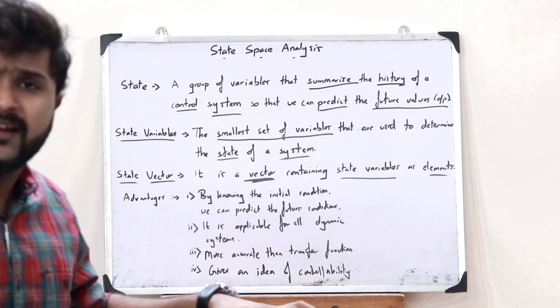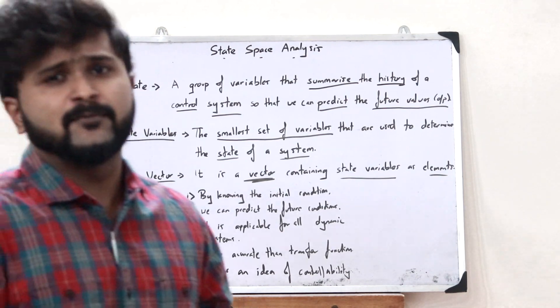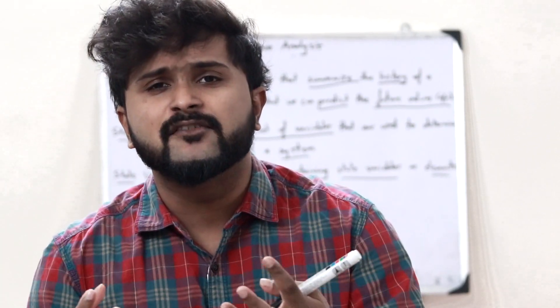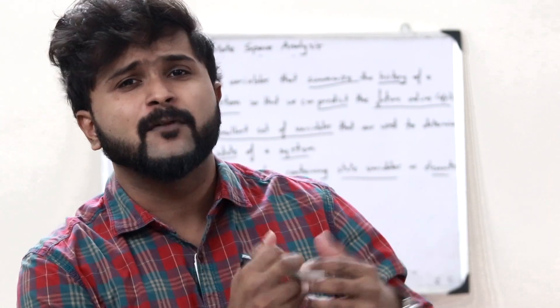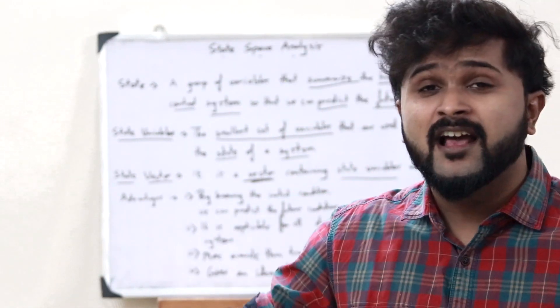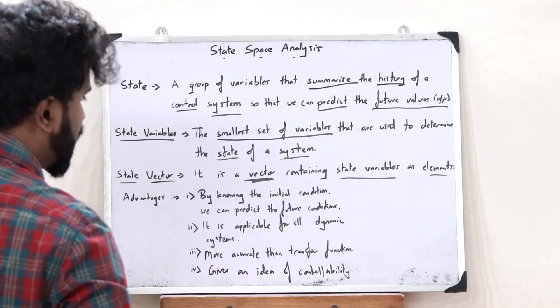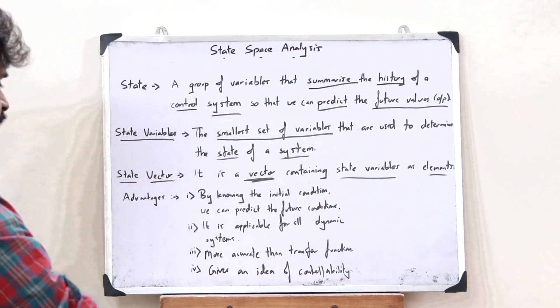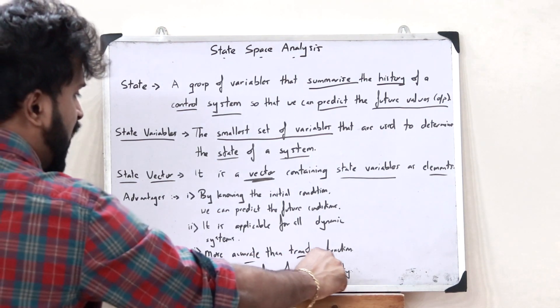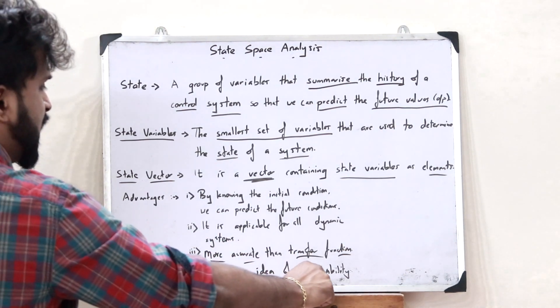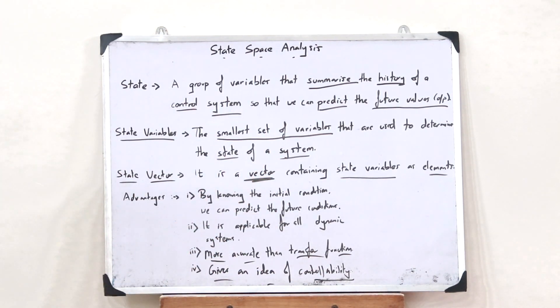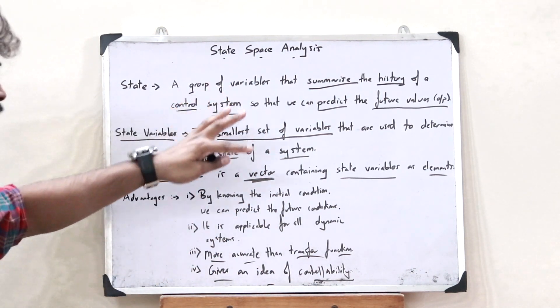The technique of state-space analysis has a huge advantage over other types of methods. One such advantage is that just by knowing the initial values, we can actually predict the future output values — that is a major advantage. This is more efficient than the conventional transfer function method, and it gives us an idea of the controllability of a control system. It is applicable for all dynamic systems, it is more accurate than the transfer function method, and it gives an idea of controllability. This is a basic idea of what you refer to as state-space analysis.